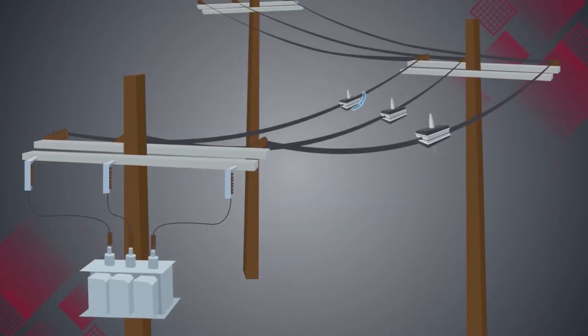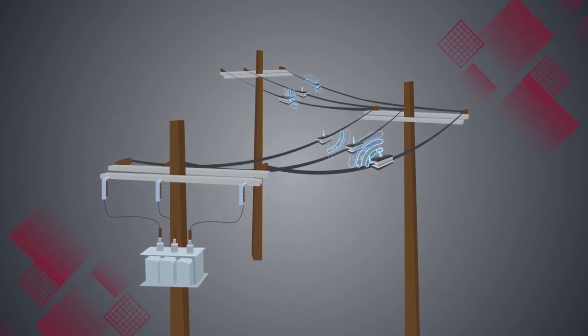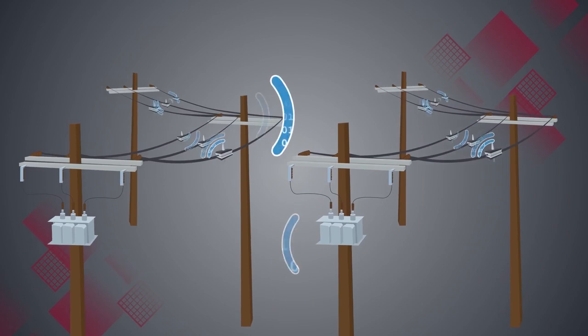Sensors are typically installed in sets of three on the distribution lines. Multiple sets of sensors are then placed across the distribution network, and these sensors are synchronized to share data between them.